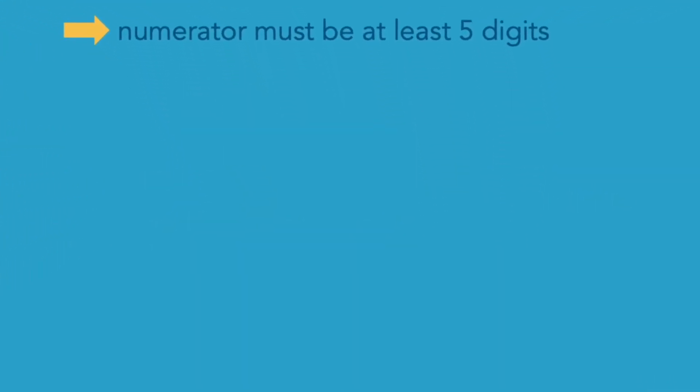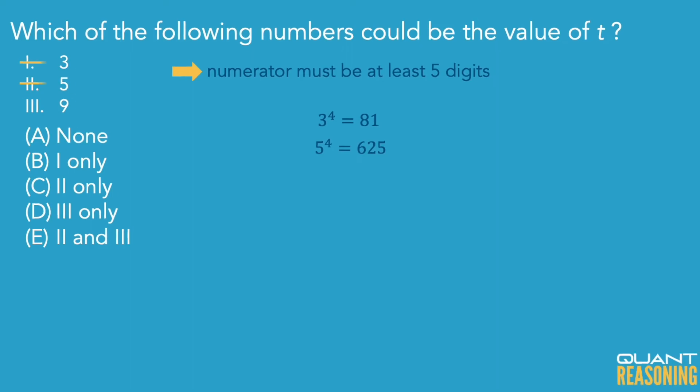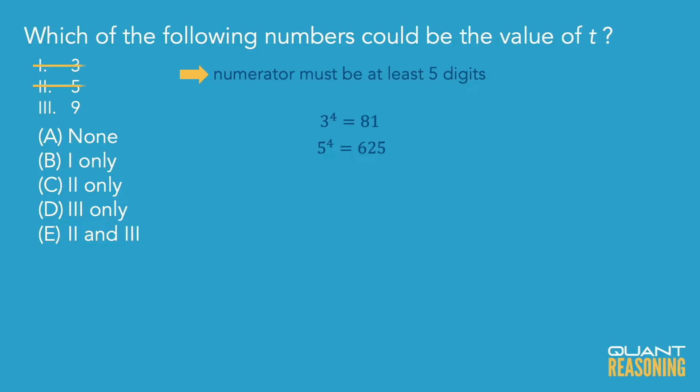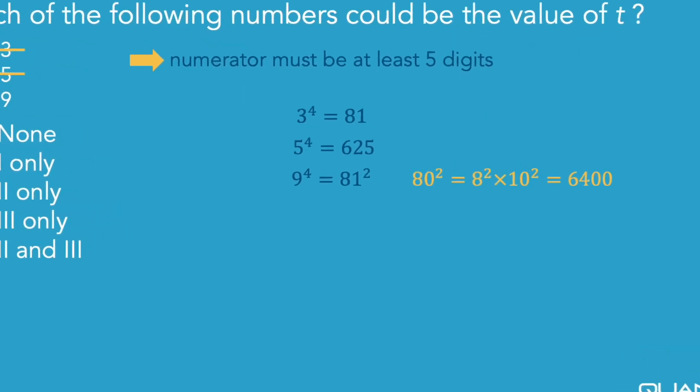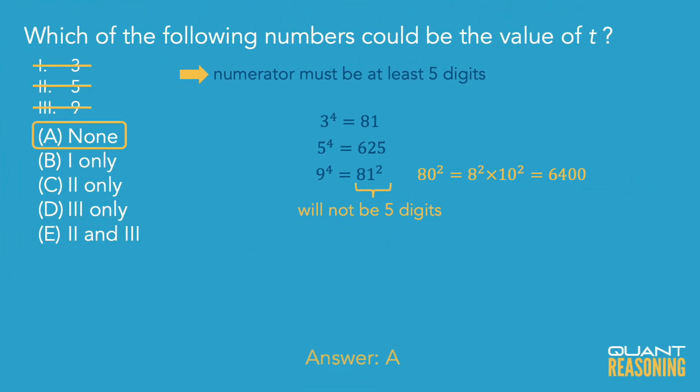Looking at the answer choices, I actually think we should have the first two memorized: 3 to the power of 4 is 81, and 5 to the power of 4 is 625. Neither of those is five digits or longer. Now the last one, 9 to the power of 4, is like 81 squared. I know that 80 squared is 8 squared times 10 squared, so 6,400. And 81 squared will just be slightly more than that — still not quite five digits. Therefore I'm going to pick answer choice A, which claims that none of these Roman numerals is possible.